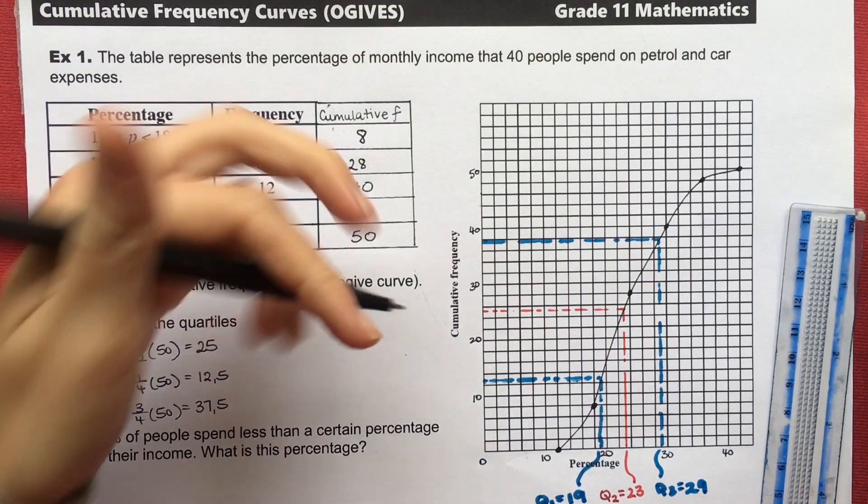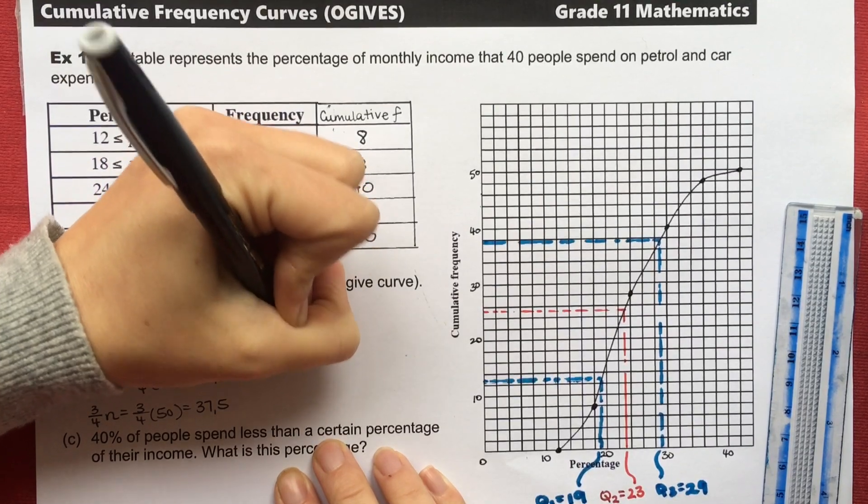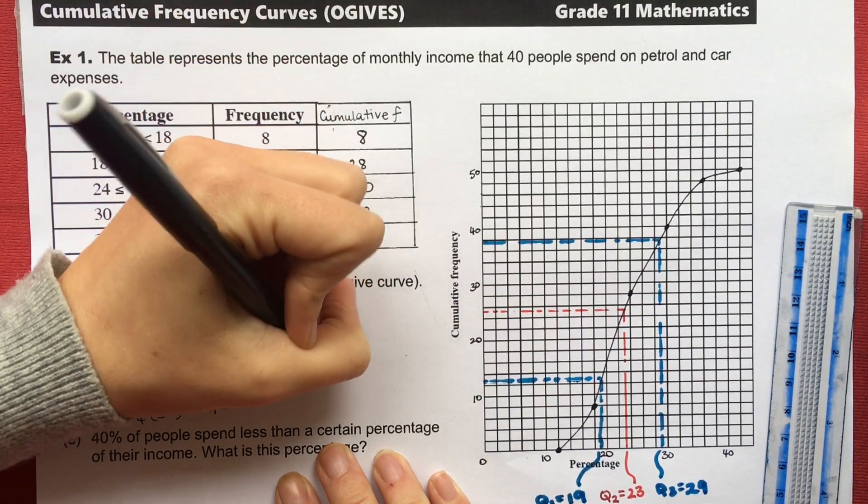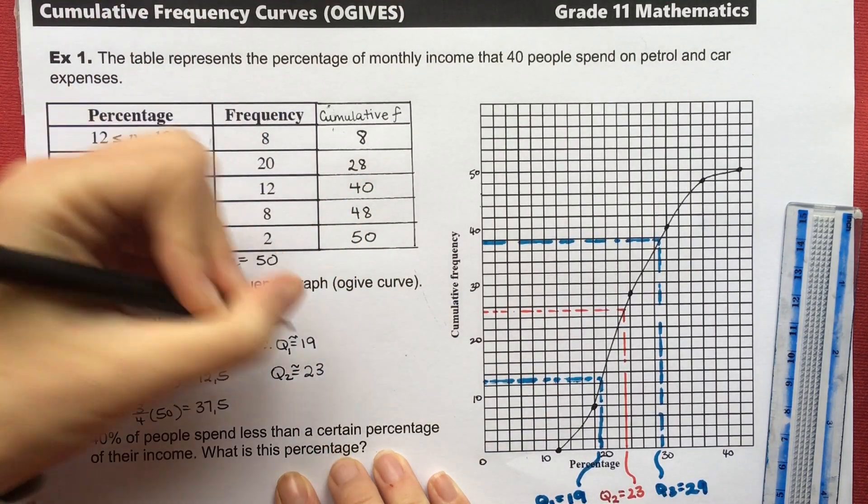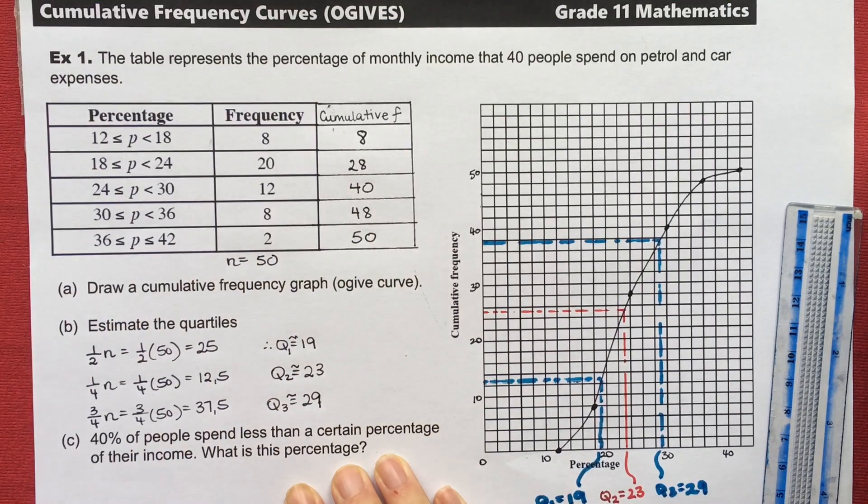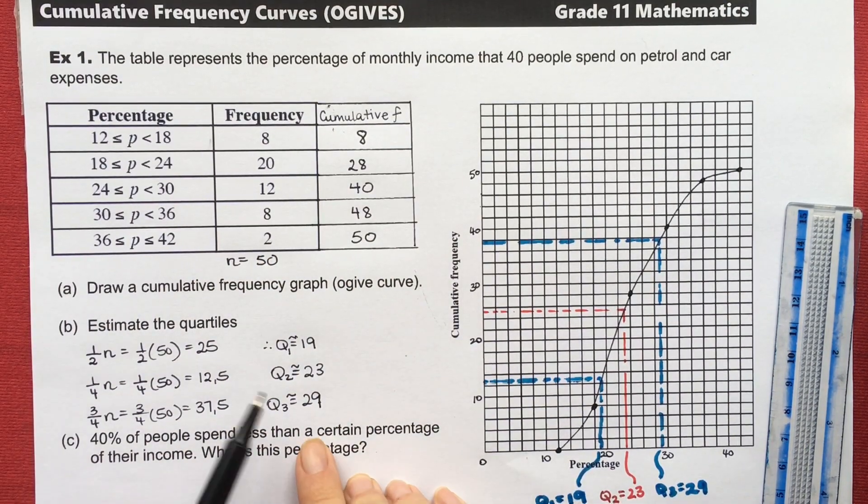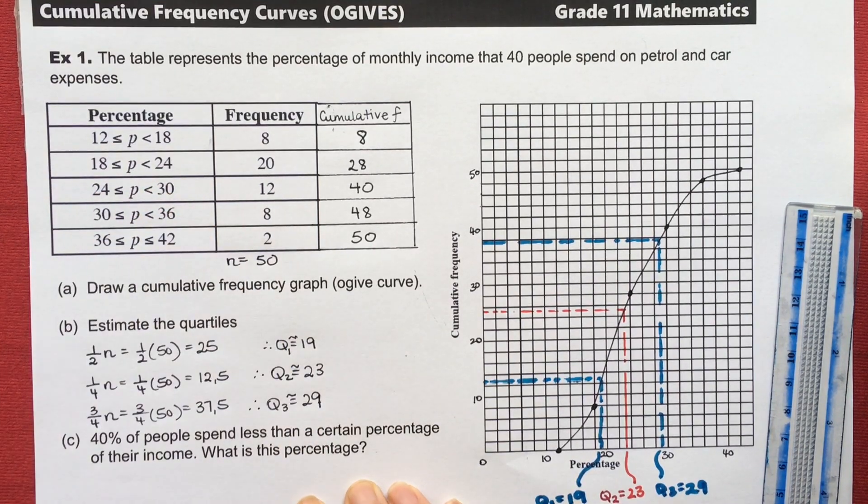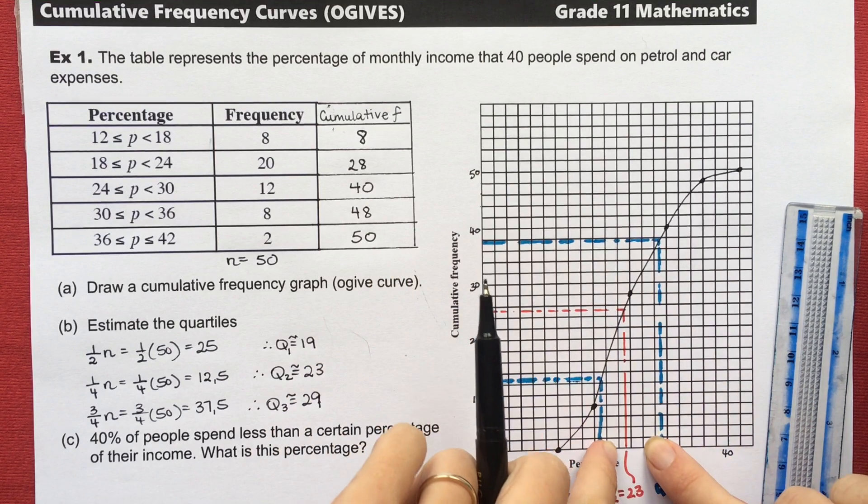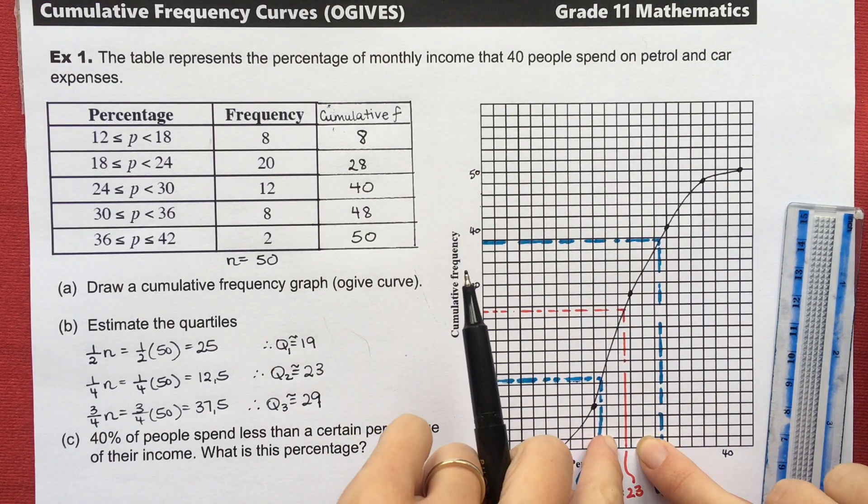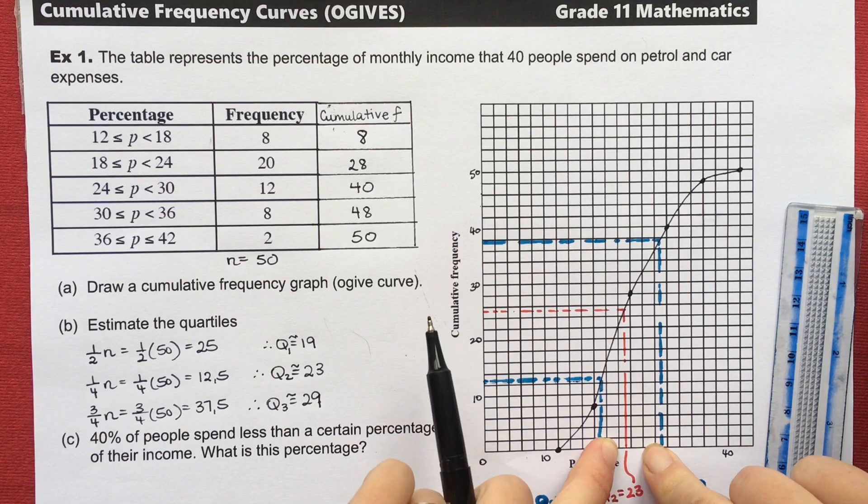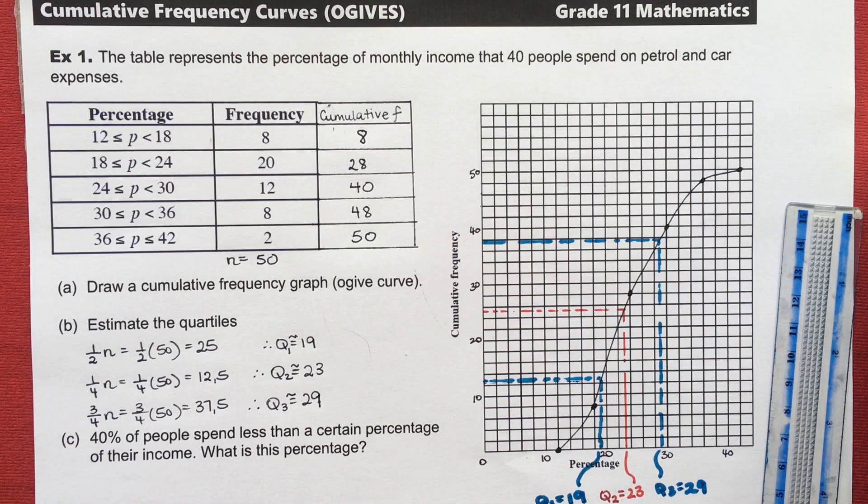So let's summarize these on the side. We're going to say, therefore Q1 is approximately equal to 19, Q2 or you could use big M for the median is approximately equal to 23, and Q3 is approximately equal to 29. In terms of marking, we generally give you a window because you're estimating based on your own curve. So we're going to mark anything correct for this median. Let's say we'd give you some wiggle room between 22 and 24 or even more. So don't stress if your answer isn't exactly the same as mine or isn't exactly the same as in the back of the book. You do get a little bit of wiggle room there.